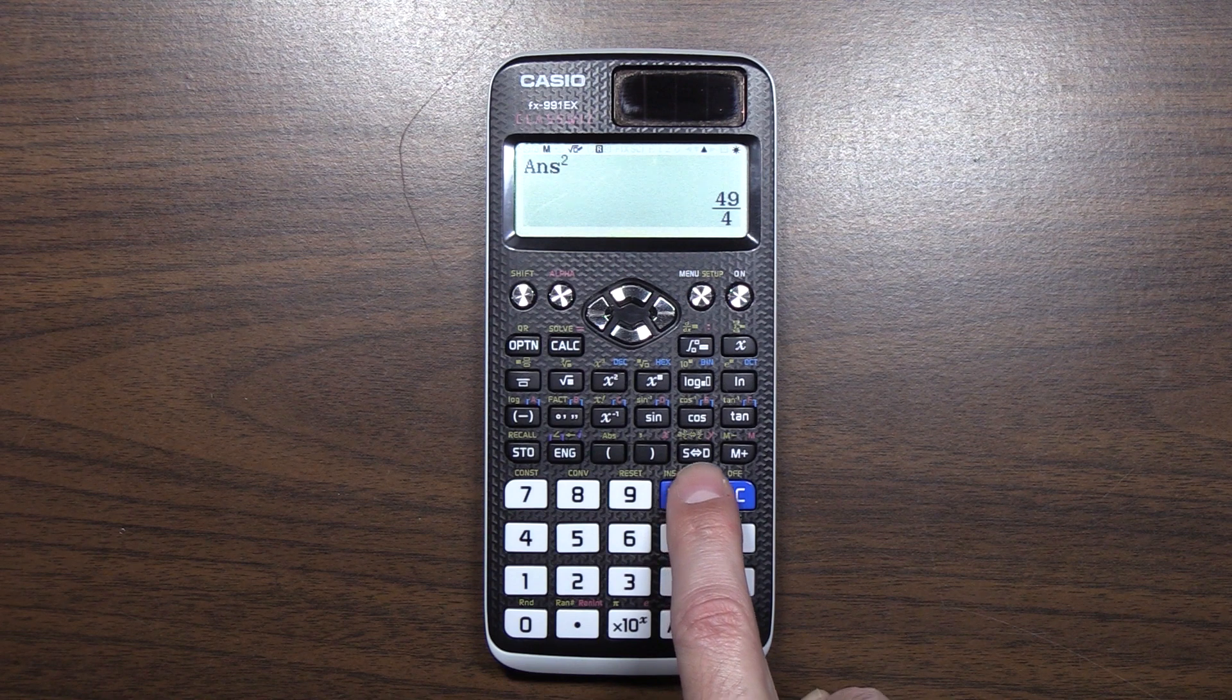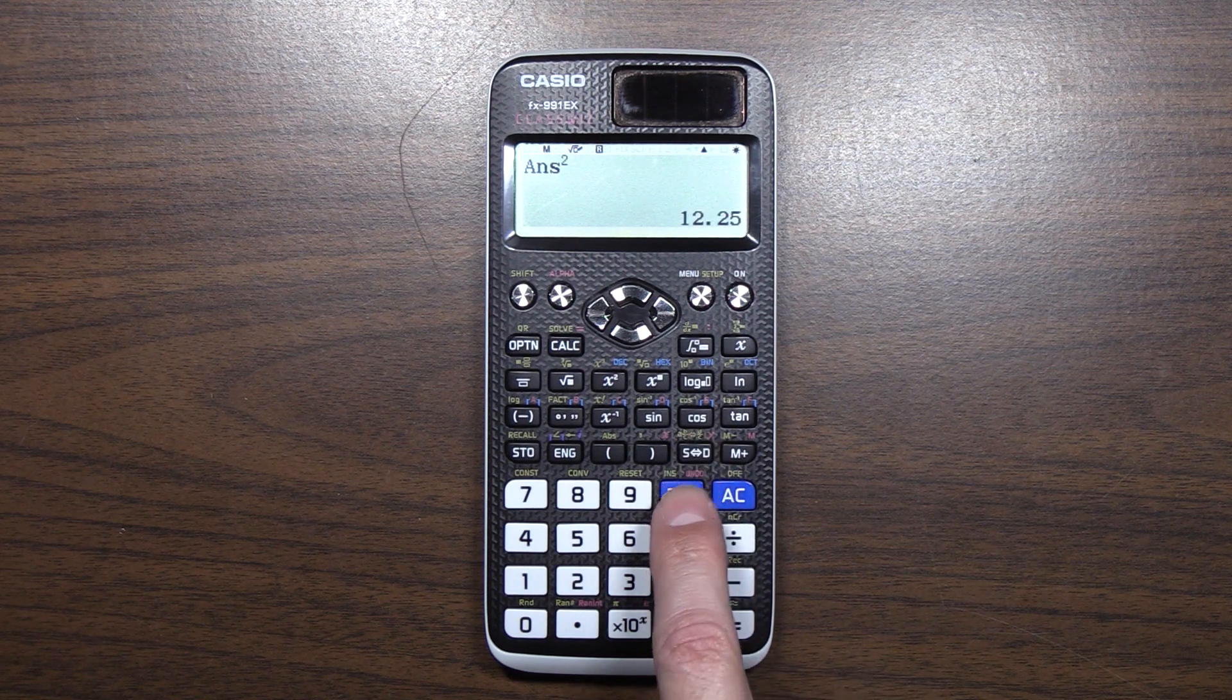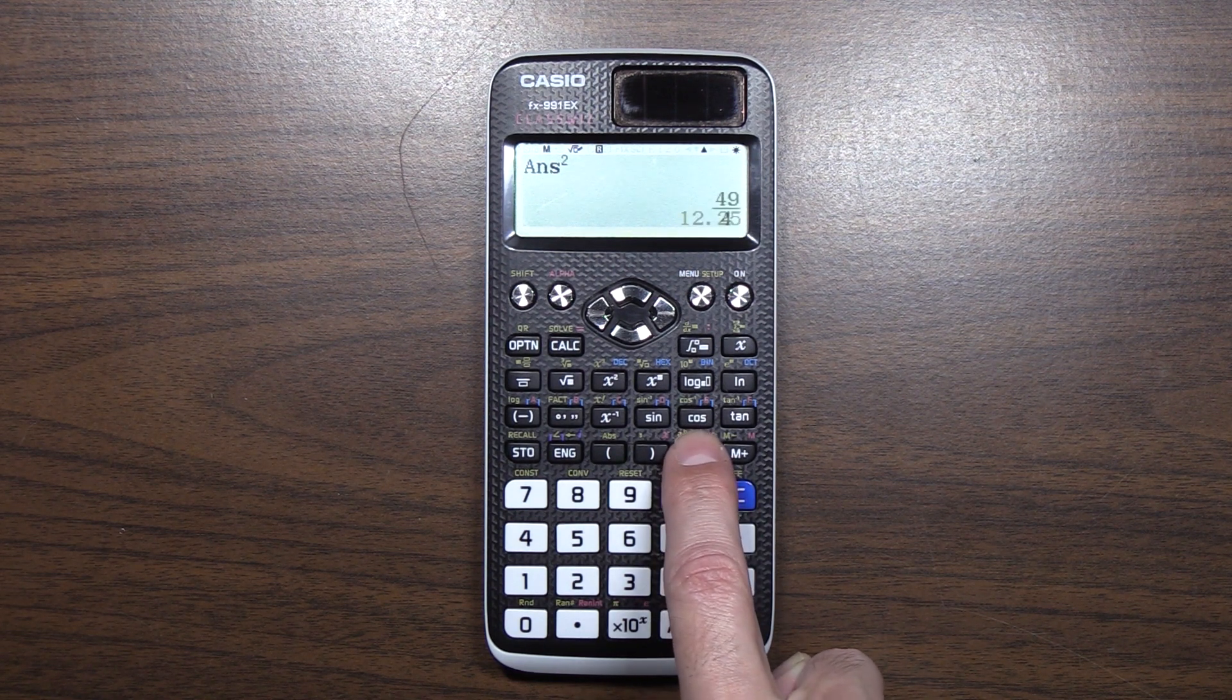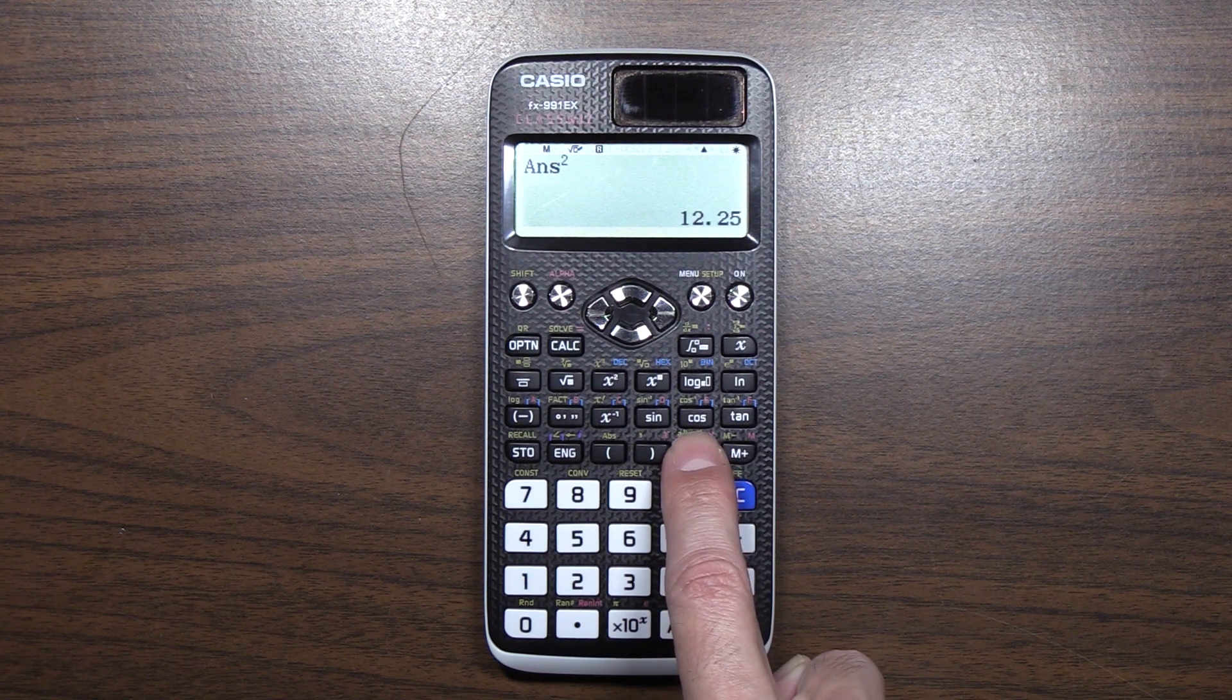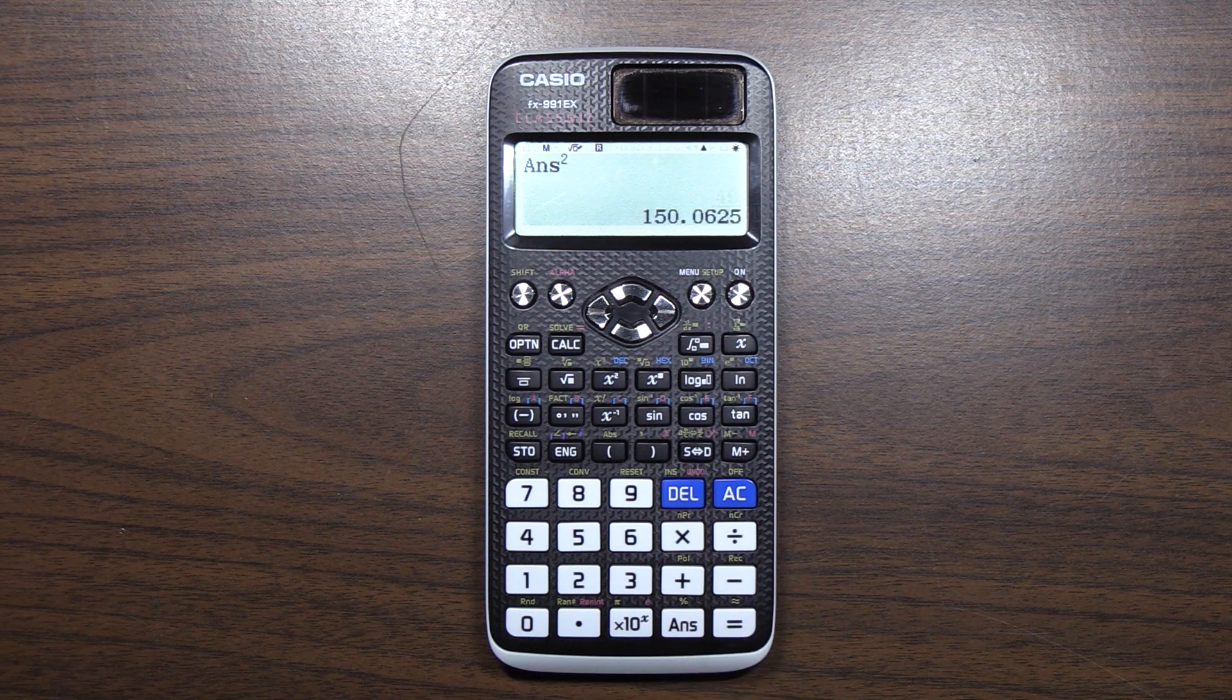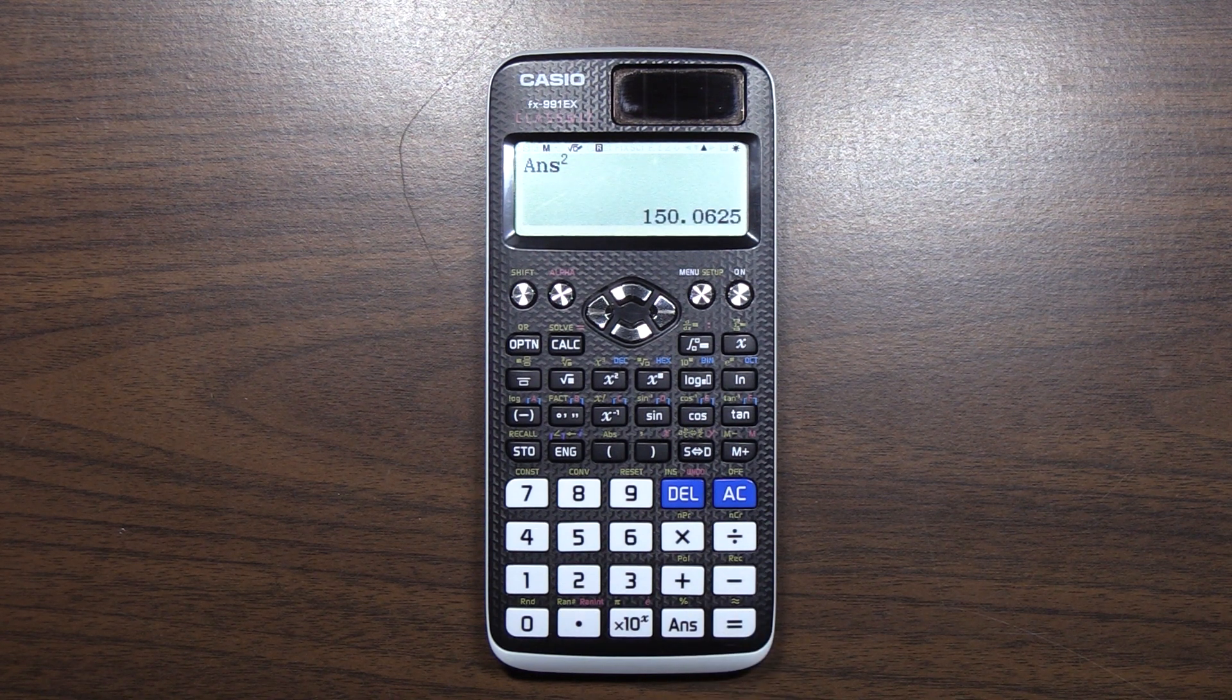If I want the actual value of this, the safe way to do it is use this S to D button. And notice it doesn't recalculate anything, it just quickly converts it to the expected decimal. On the other hand, if we use this shift and approximately equal, we get this errant result.